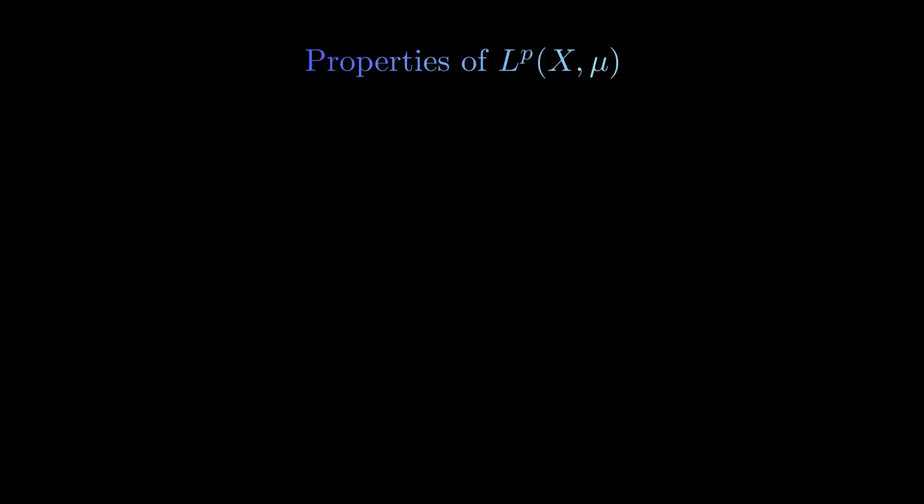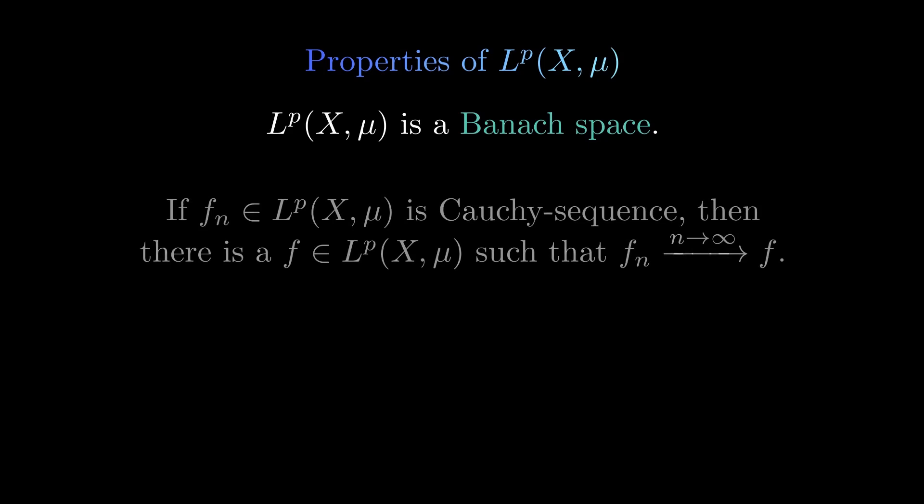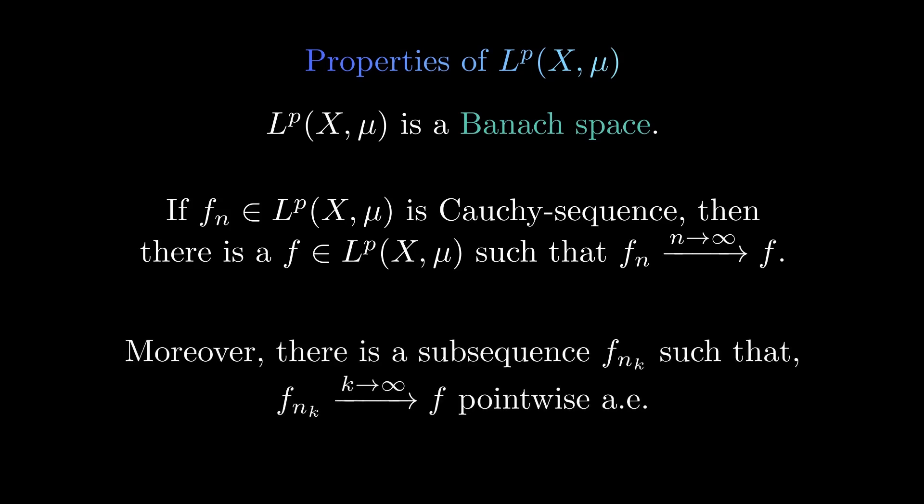First of all, the L^p spaces are Banach spaces, which means that they are complete with respect to the p-norm. So, any Cauchy sequence in an L^p space converges with respect to the p-norm. However, this does not mean that the sequence also converges pointwise. Fortunately, we are at least able to say that there is a subsequence that converges pointwise almost everywhere.